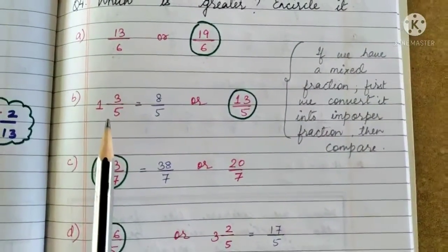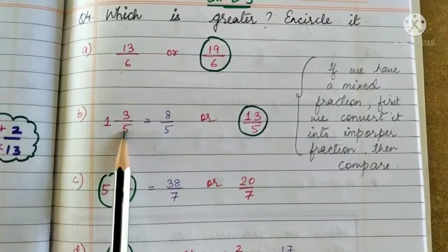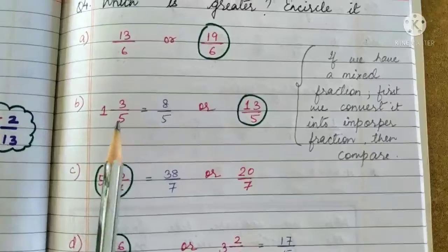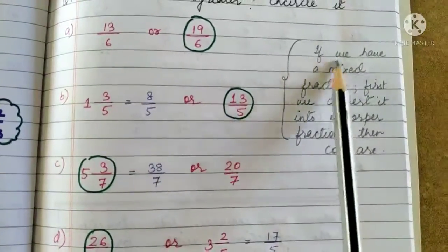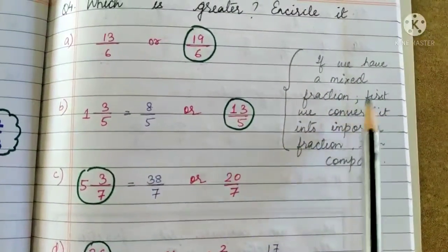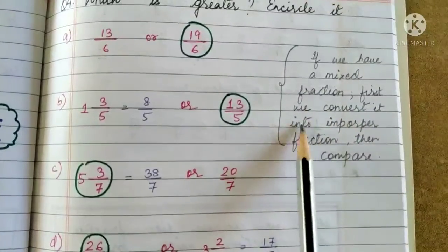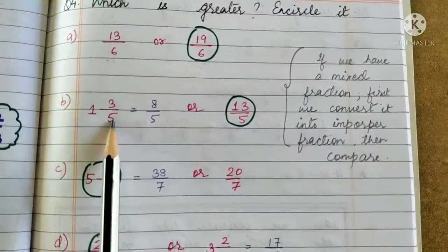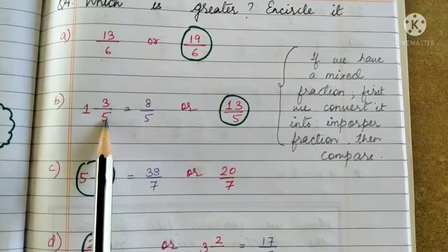We have some special cases where we have a mixed fraction and an improper fraction. Here what do we do? If we have a mixed fraction, first we convert it into improper fraction, like 1 3/5. So what do we do? We convert it to improper fraction. How?